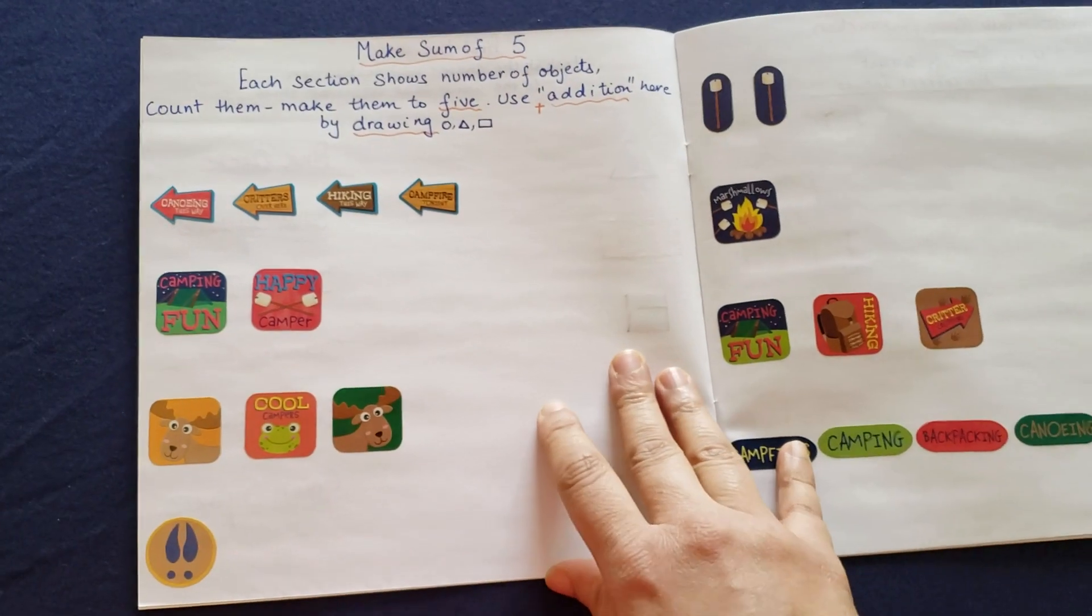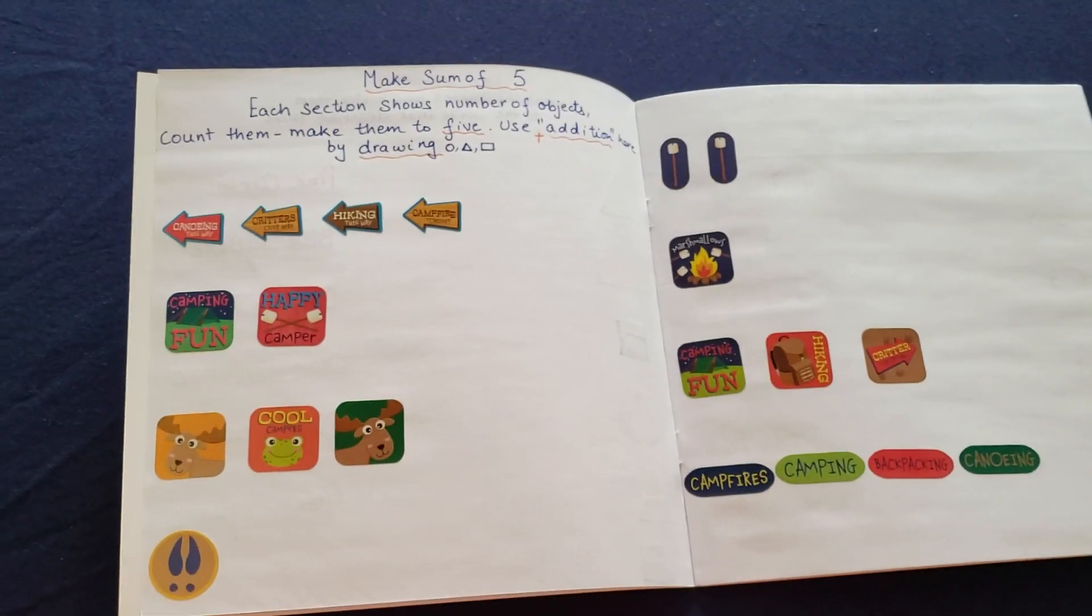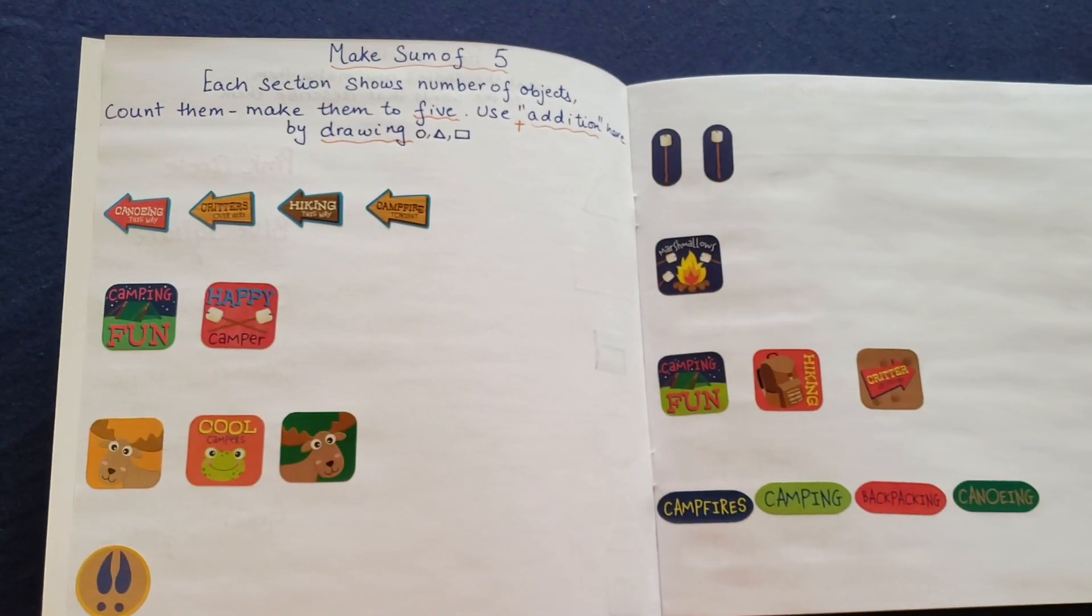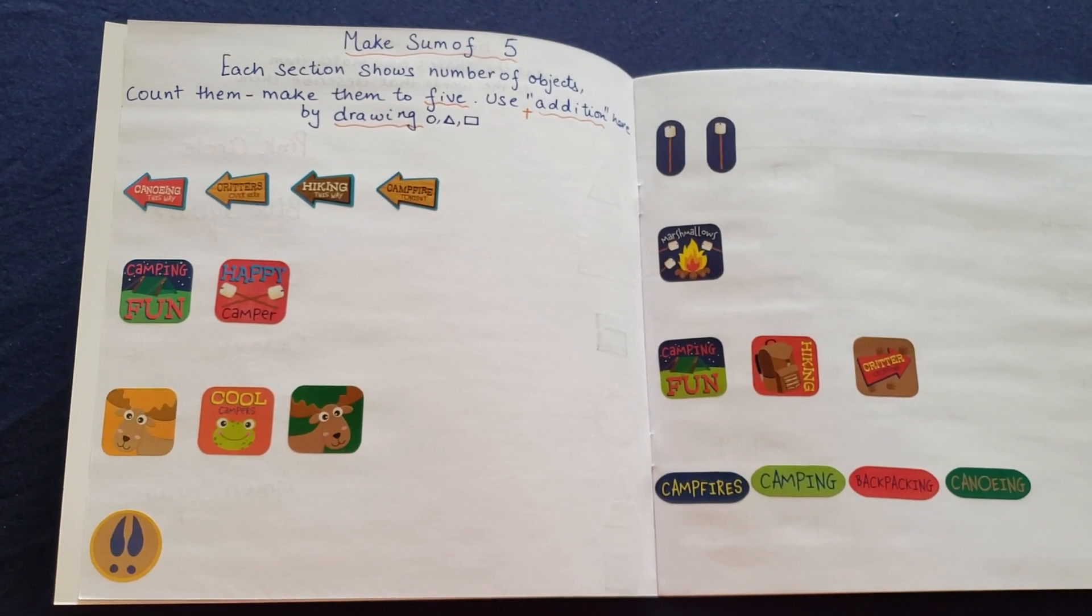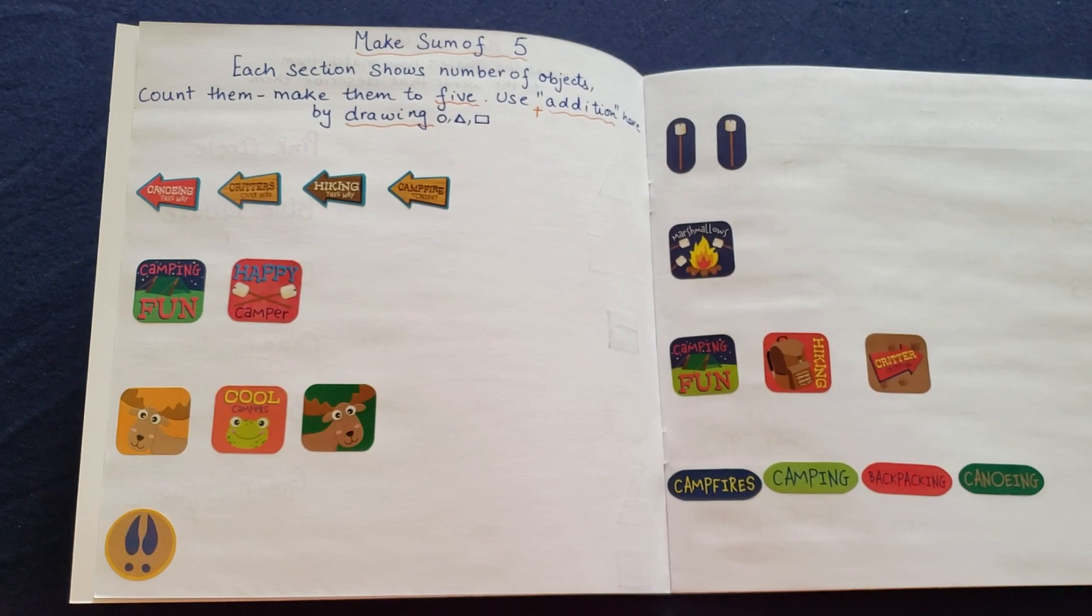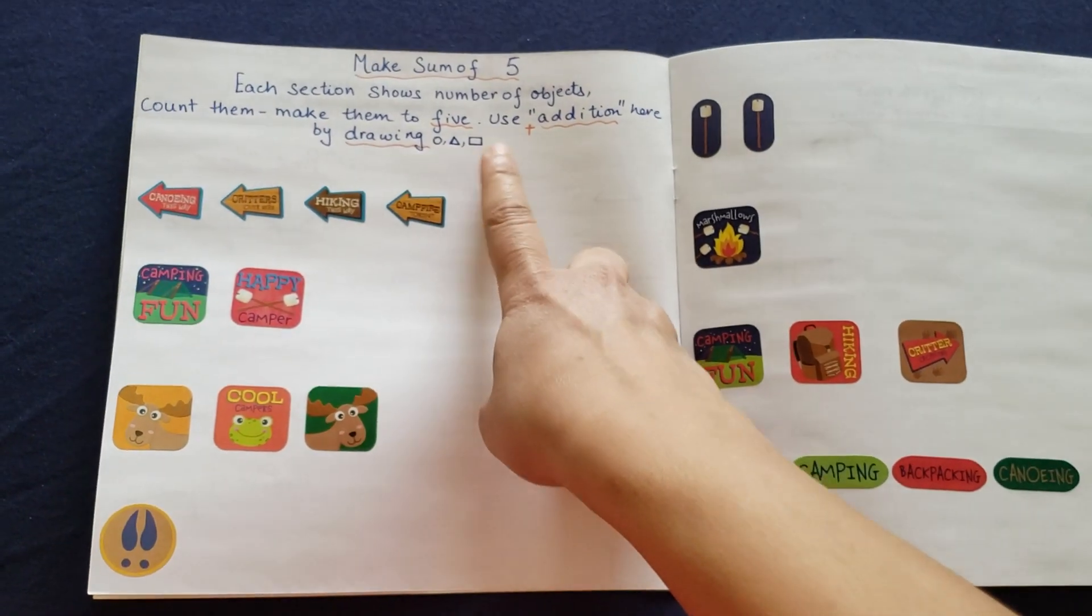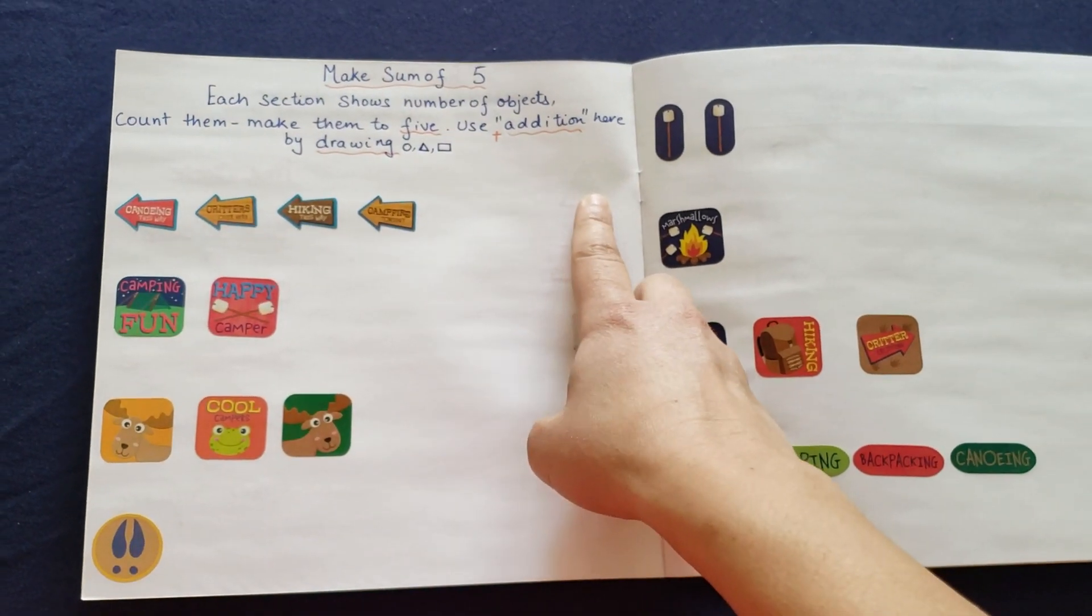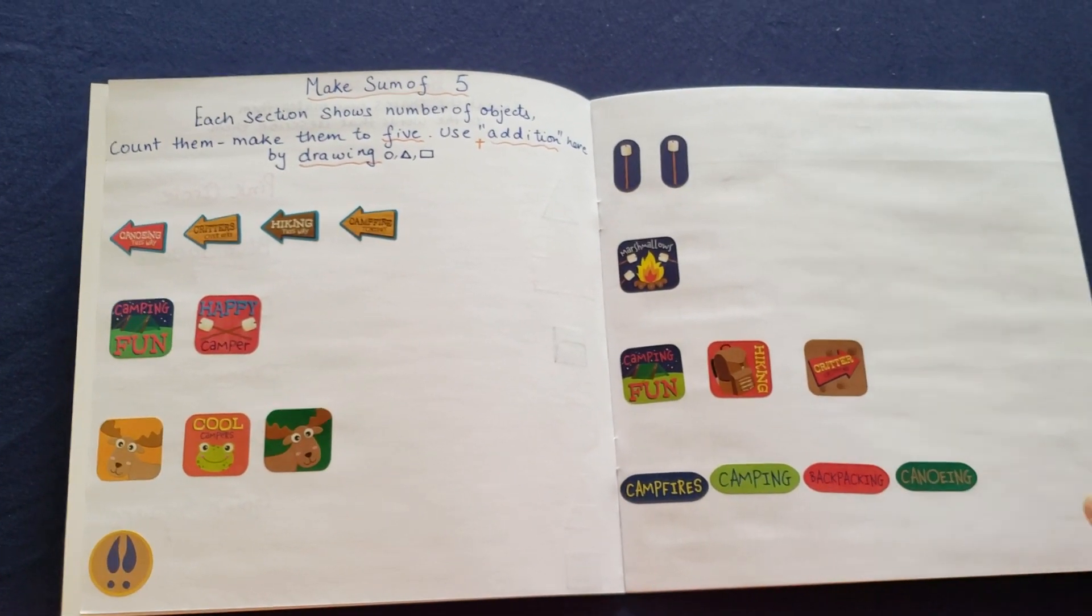Going forward, I have mixed sum of five. Her mom told me that she likes to do addition and subtraction, so I've tried incorporating a few activities of that. Each section shows number of objects. Count them, make them to five, use addition here by drawing circle, triangle or rectangle. She needs to find and see which one is missing, how many are missing and then draw. So I have four here and four here, total eight problems that she needs to solve.